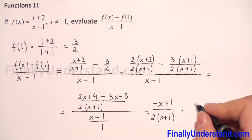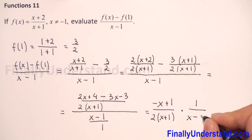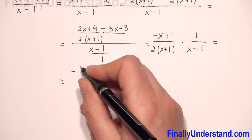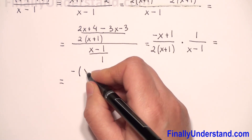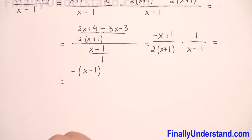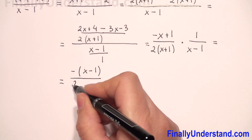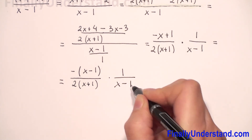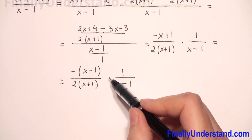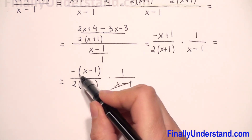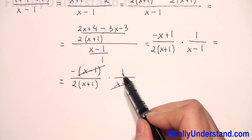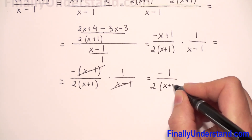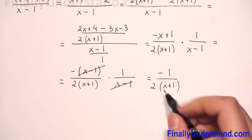Because I have division, I change it to multiplication and flip the fraction, so it will be times 1 over x minus 1. I can factor out negative 1 in the numerator, giving negative times x minus 1, over 2 times x plus 1, times 1 over x minus 1. I can reduce x minus 1, leaving negative 1 over 2 times x plus 1. This is my solution.